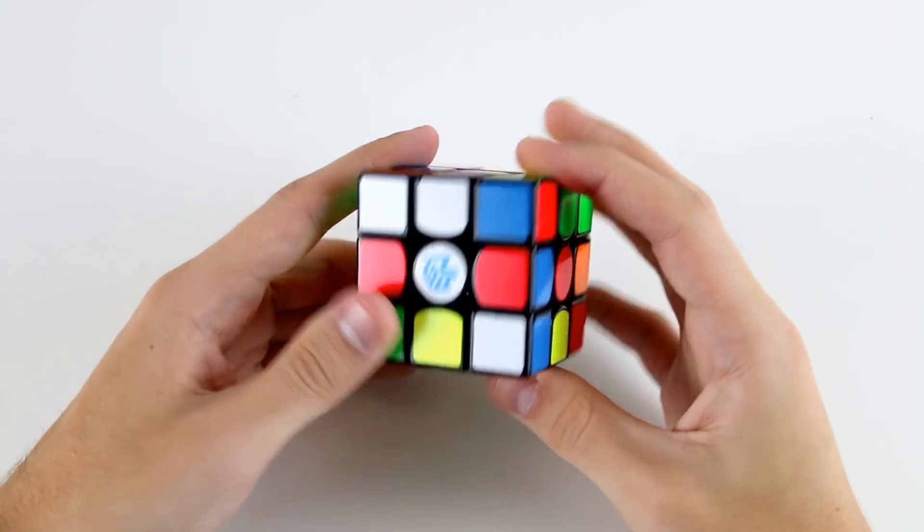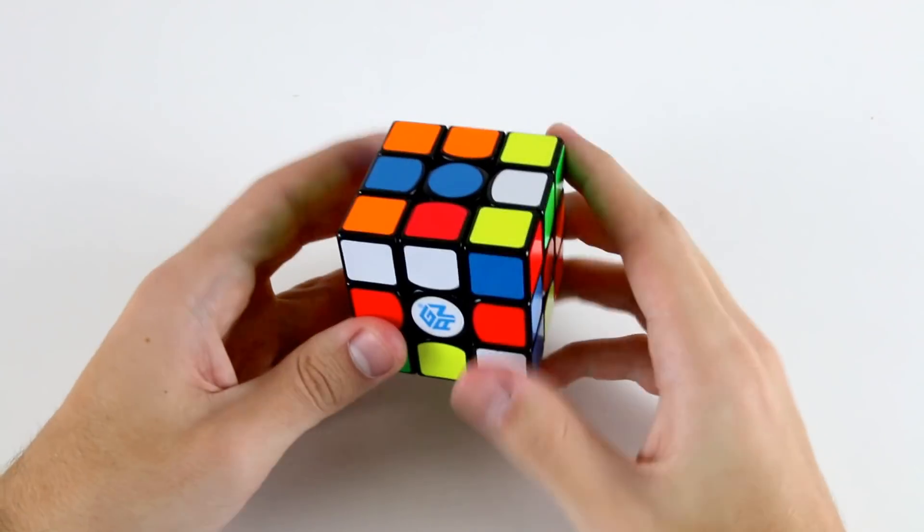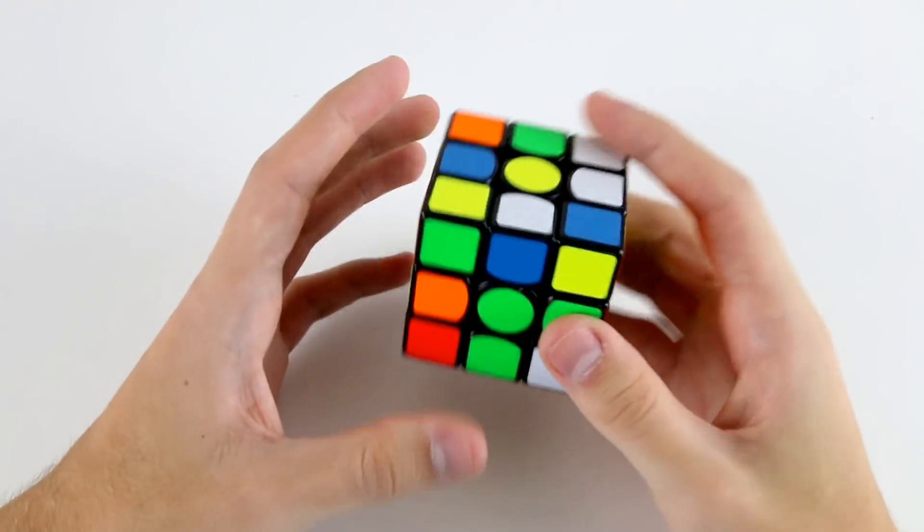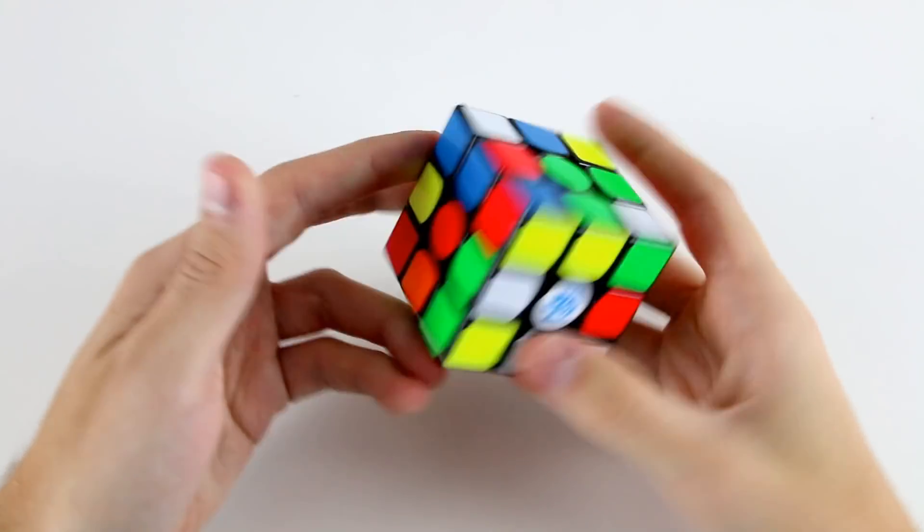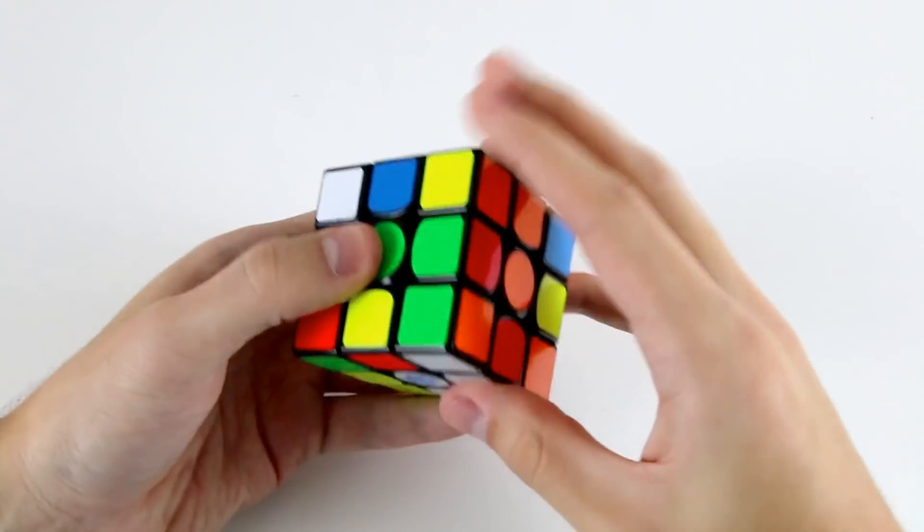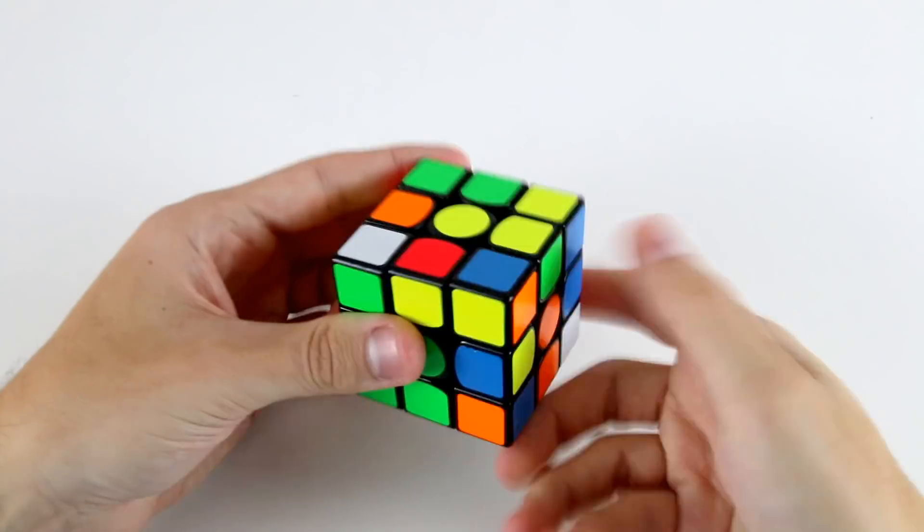Okay, second solve with white cross. I've got this cross edge oriented in my cross layer, and also this one, which belongs right here. So if I do something like l', then I guess a standard way of inserting these last two would be to do something like d', f2, d2, r2.